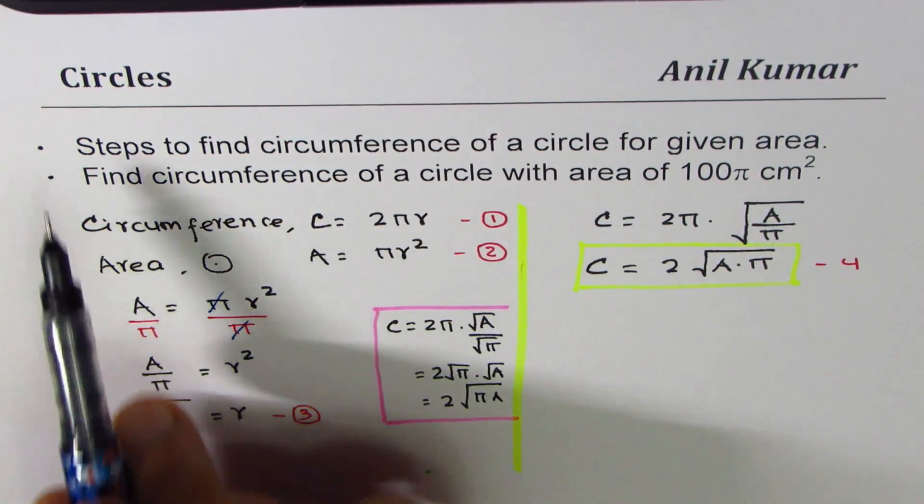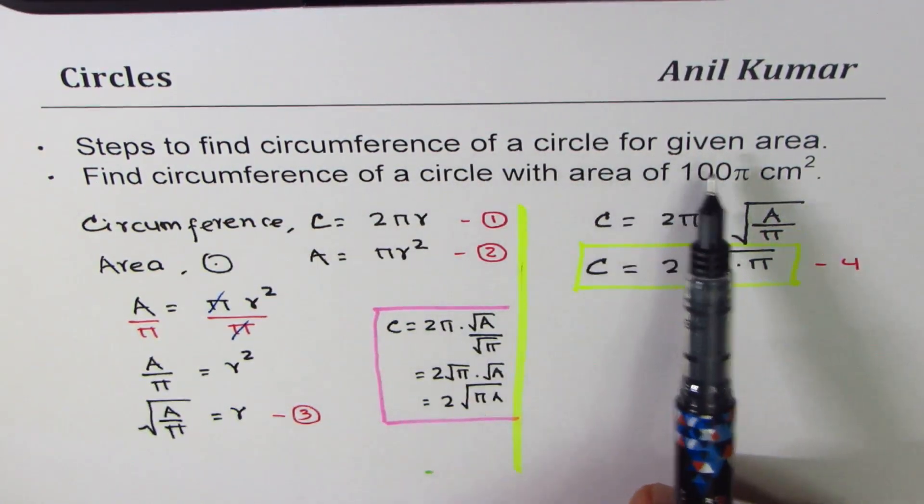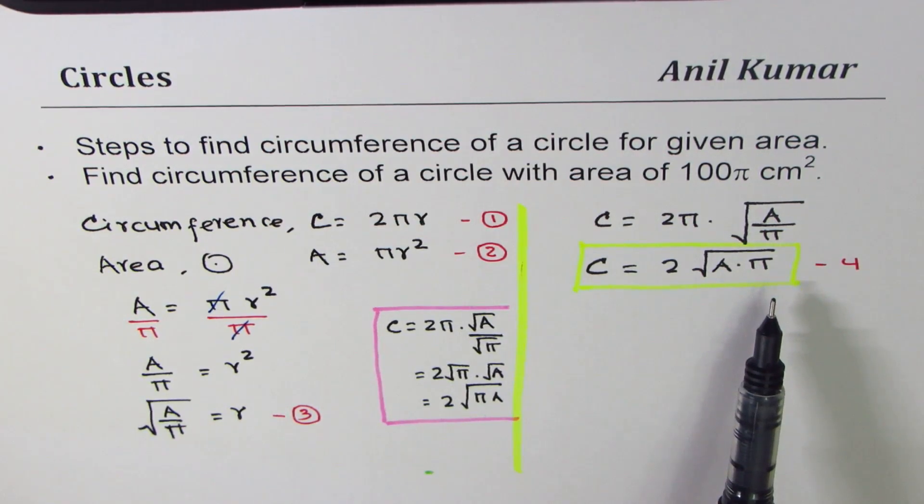So we have done part a. That is, we have understood steps to find circumference of a circle from the given area. So you could derive a formula as we did here. Now, we are given area equals to 100π centimeter square.